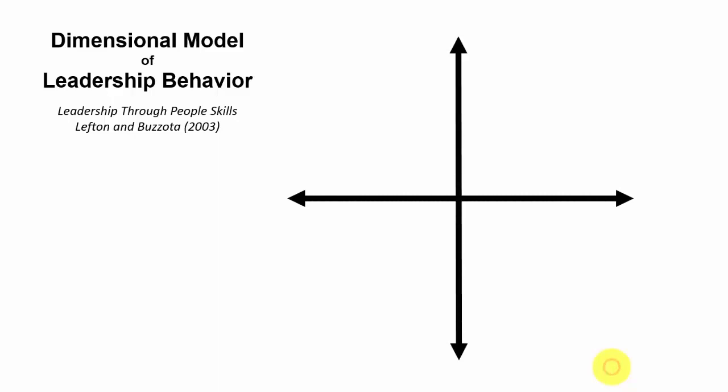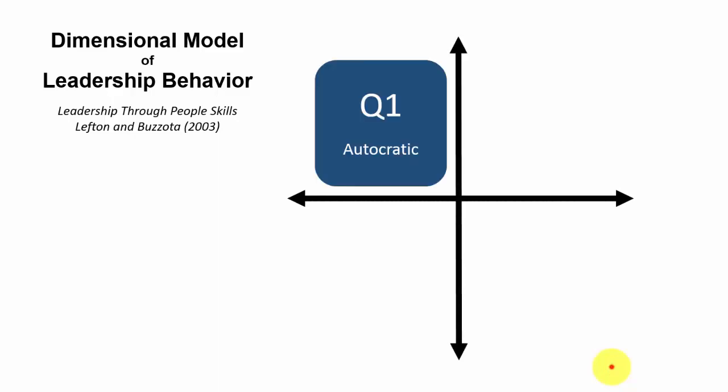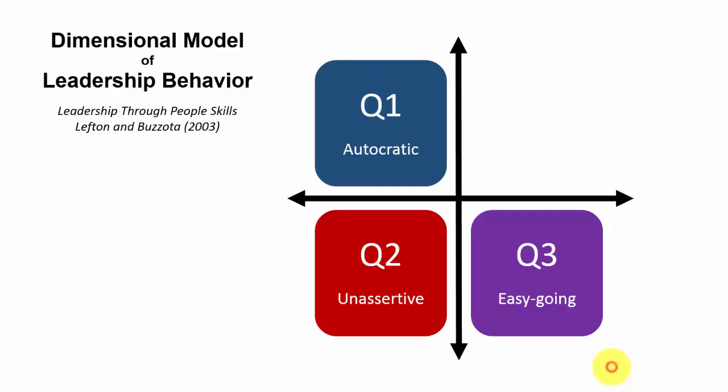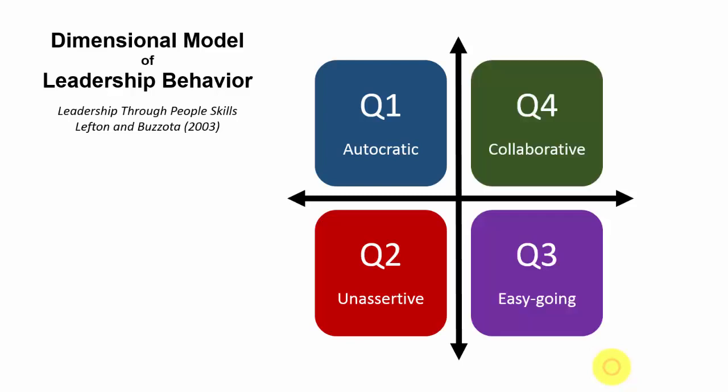Let's see how that looks. Now I can talk about the horizontal dimension, then the vertical dimension, and then each leadership type.